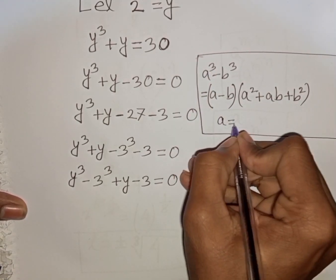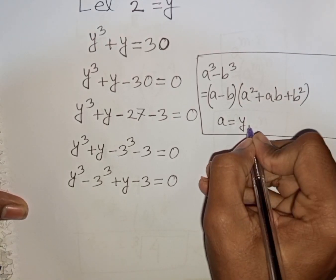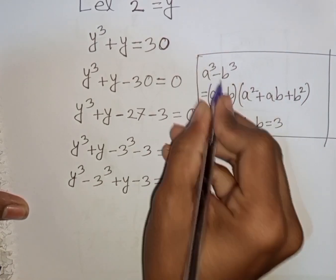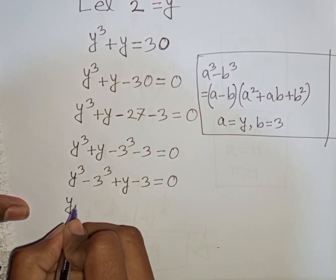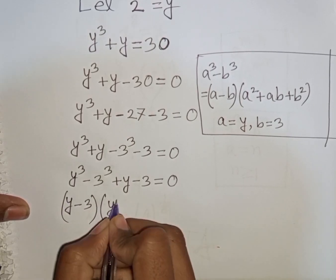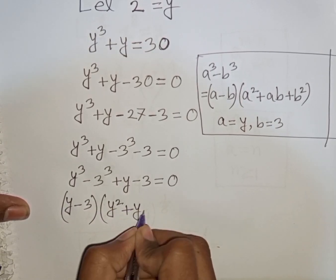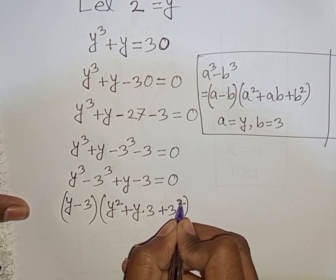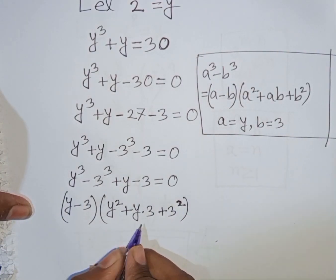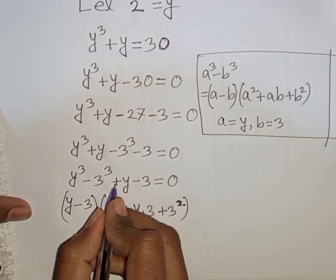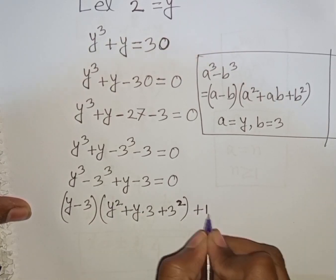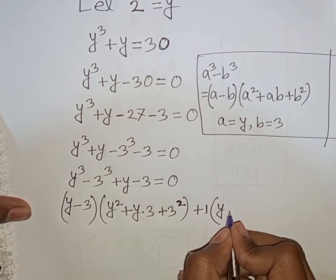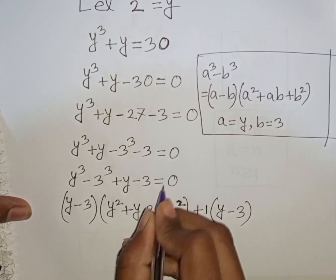Here a will be equal to y and b will be equal to 3. So according to this formula I can write: y minus 3, times y squared plus y times 3 plus 3 squared. That is the formula for a cubed minus b cubed. Then for the remaining term, plus 1 is taken as common factor out of the bracket, giving plus 1 times y minus 3, equal to 0.